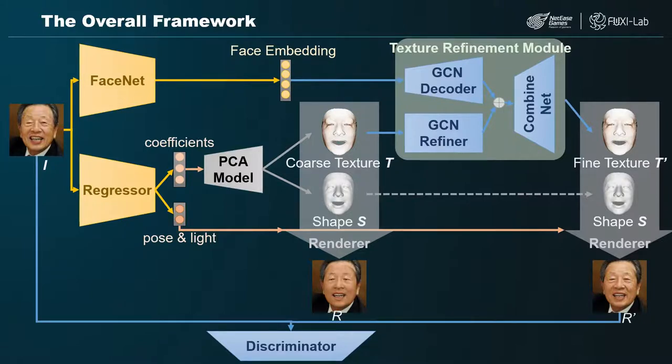Then the coarse texture and the face embedding extracted by the face net are fed into the GCN refiner and decoder respectively. The outputs of the two GCNs are concatenated along the channel axis and fed to the combine net, which produces the fine texture.